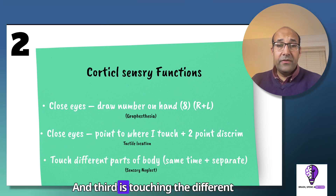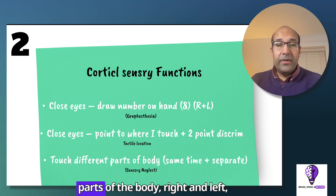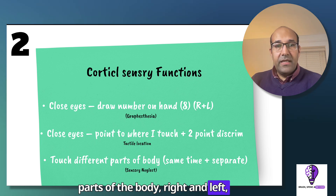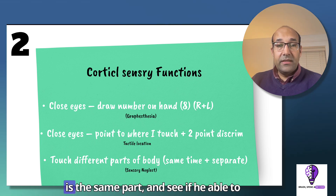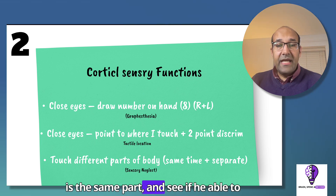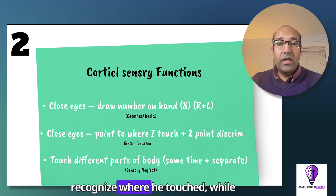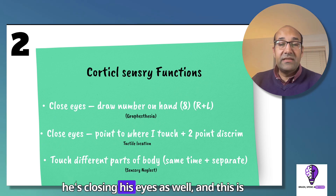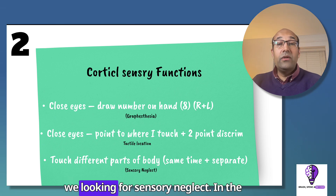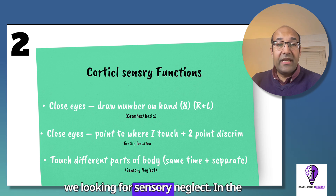Third, touch different parts of the body — right and left — sometimes different parts, sometimes the same parts, and see if he is able to recognize where he was touched while his eyes are closed. This is testing for sensory neglect.